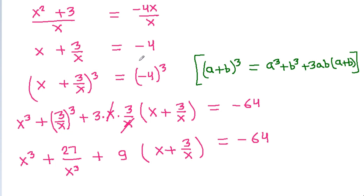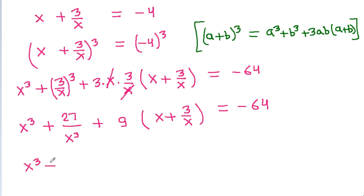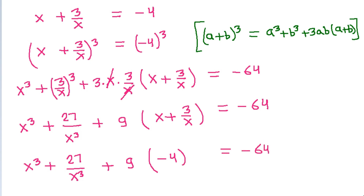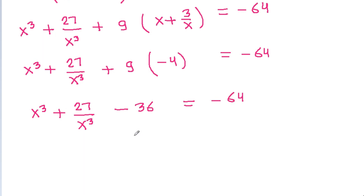Since x - 3/x = -4, we get x³ + 27/x³ + 9 × (-4) = -64, so x³ + 27/x³ - 36 = -64, therefore x³ + 27/x³ = -64 + 36 = -28.